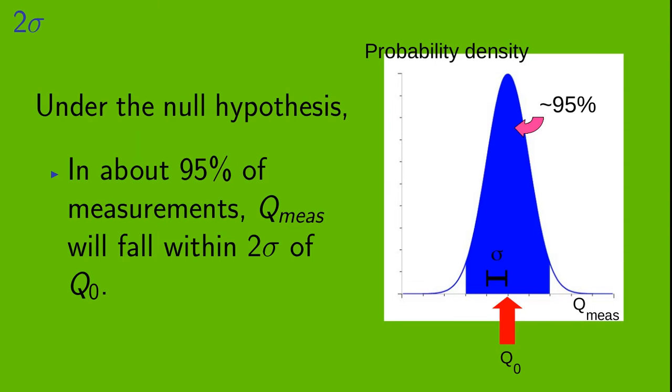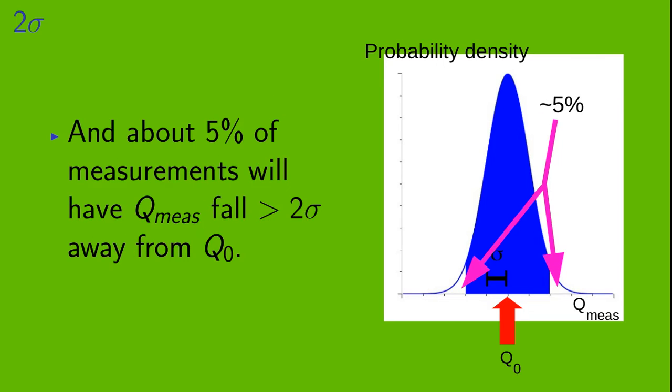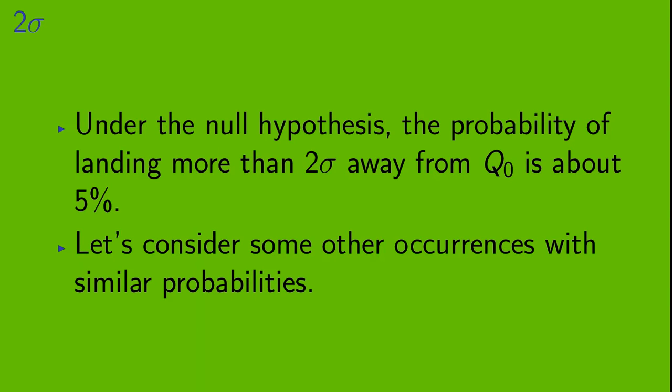Okay, two sigma. So under the null hypothesis, in about 95% of measurements, Q measured will fall within two sigma of Q0. And this means that about 5% of measurements will have Q measured fall more than two sigma away from Q0. Half of them will be above the blue band, and half of them will be below. Under the null hypothesis, the probability of landing more than two sigma away from Q0 is about 5%. So let's consider some other occurrences with similar probabilities.